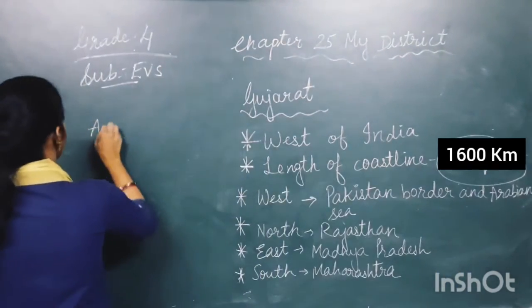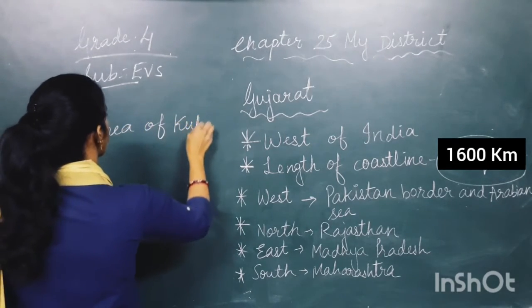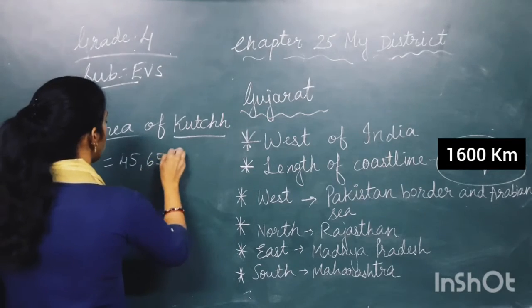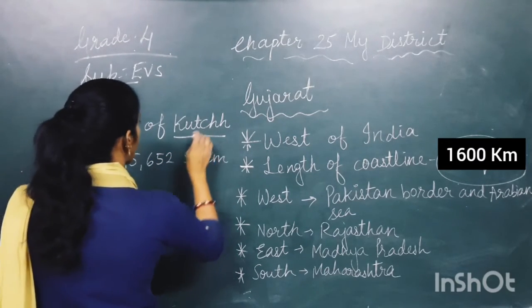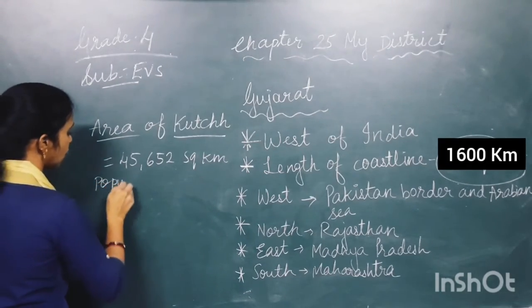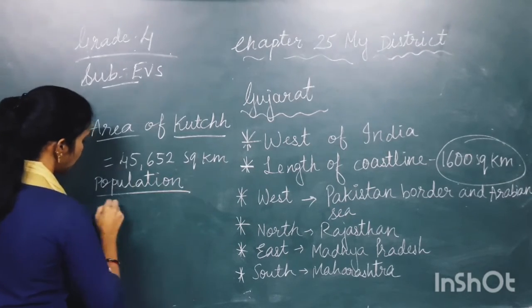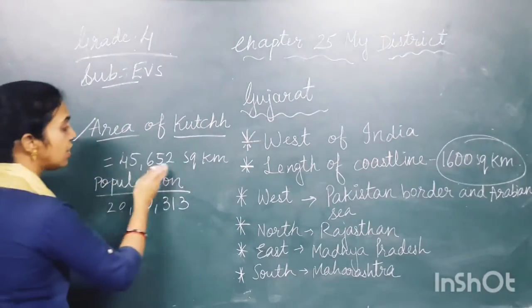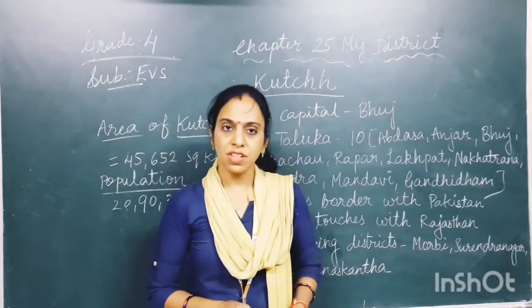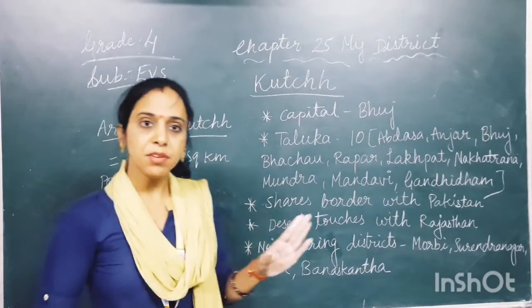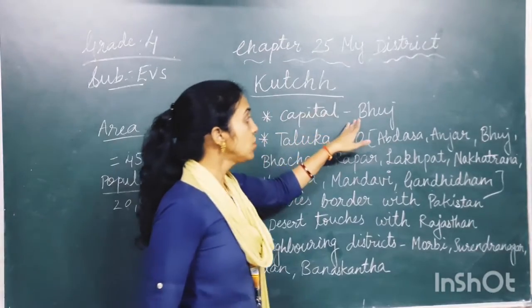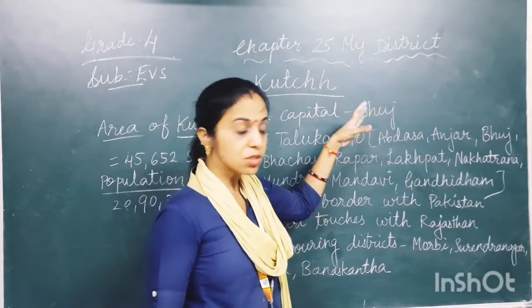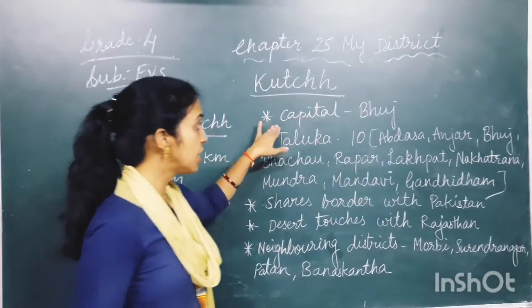The area of Kutch is 45,652 square kilometers, making it the largest district according to area. Its population is 20,90,330. The capital of our district is Bhuj, which is the main city of Kutch.